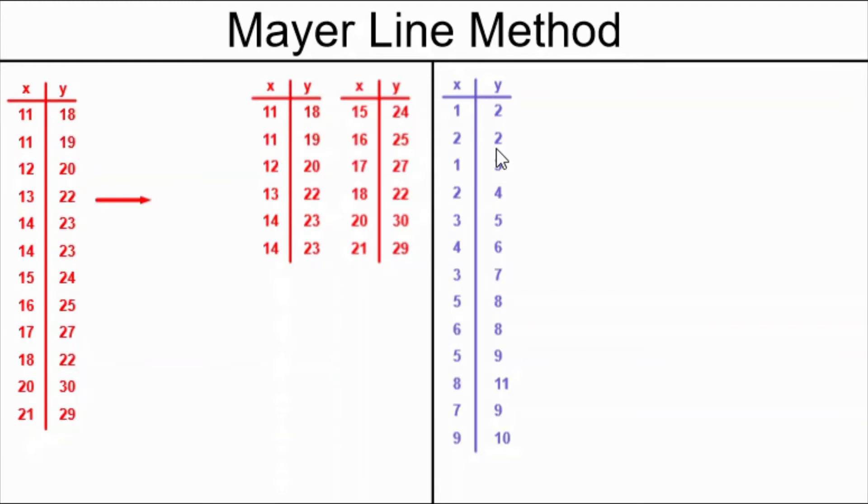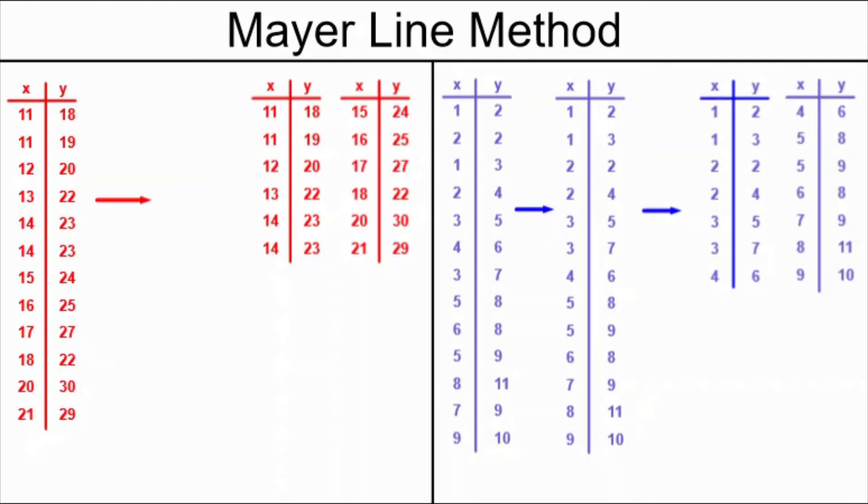With the blue example, there are 13 points. When we split the data into two smaller tables, in order to make sure that the two tables are the same size, we take that middle point, which is the one with an x coordinate of 4 and a y coordinate of 6, and we use it twice.